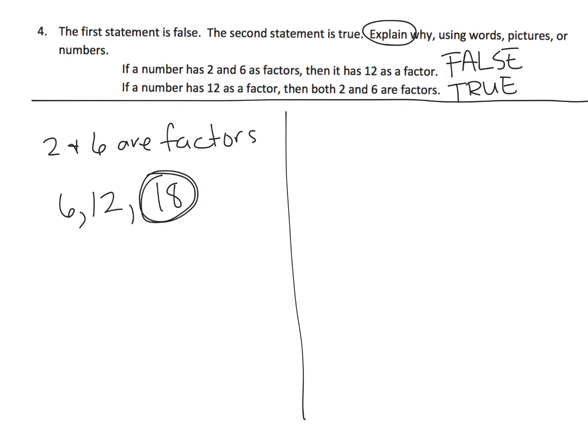Ah, but here is a number. Well, 18 has both 2 and 6 as factors. So, because 2 goes into 18 and 6 goes into 18, but 12 is not a factor of 18, because 12 does not go into 18.